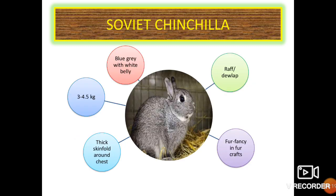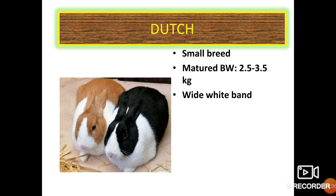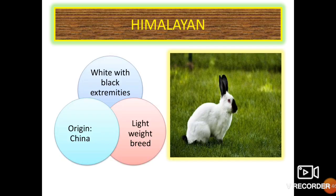The Soviet Chinchilla is blue-grey with a white belly and body weight of 3 to 4.5 kg. The dewlap is a thick skin fold present in front of the chest. The Dutch breed is small with a measured body weight of 2.5 to 3.5 kg and has a wide band around the chest and shoulder region. The Himalayan breed has its origin in China; it is white with black extremities and is a lightweight breed.